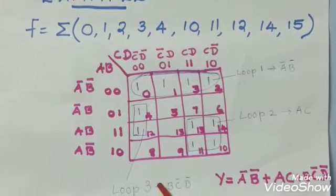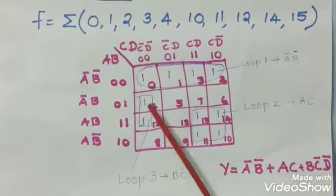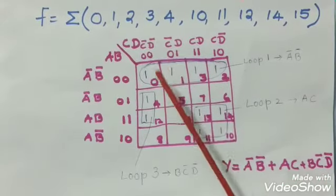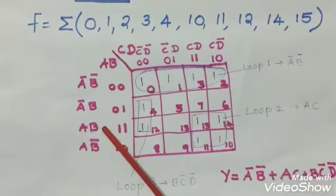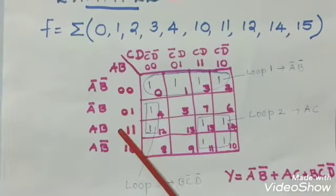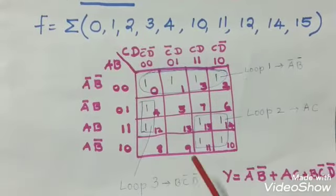Next, for loop 3, this pair loop, C bar, D bar. Take C bar, D bar and in this direction, only B remains same. So, take only B. So, answer is B, C bar, D bar.